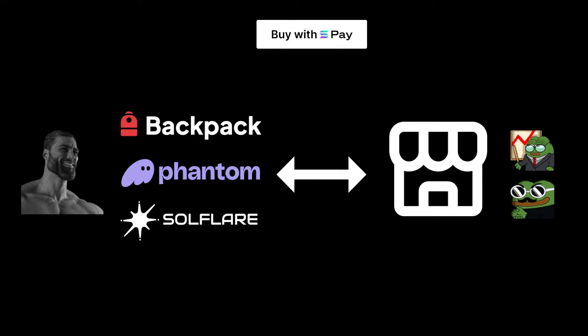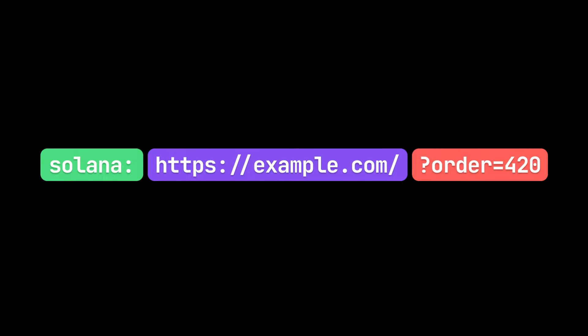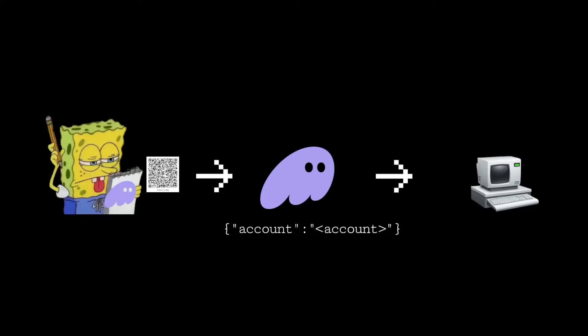The spec also defines interactive transaction requests. With these, the URLs contain a link that a wallet needs to interact with. When a user scans a QR code, the wallet creates a POST request to the server with the user's account address. Now that the server knows what account it's interacting with, it can create a custom transaction that does any number of things.